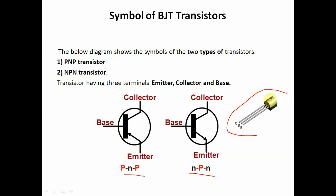This is the symbol, and practically transistors have three terminals. What is the meaning of base, collector, and emitter? What is the identification by multimeter? The three terminals are collector, base, and emitter. Transistors have three terminals.